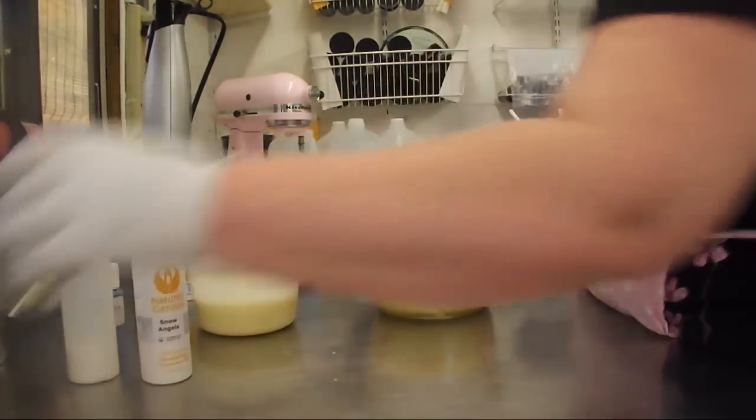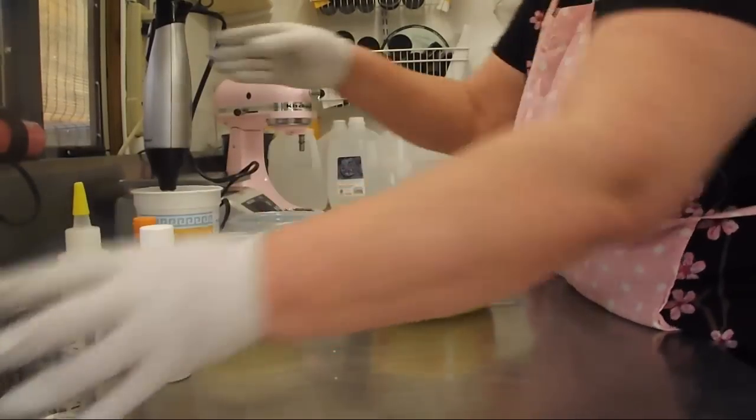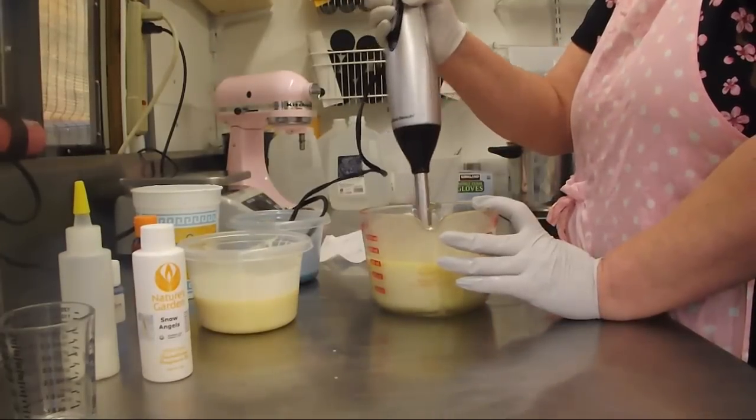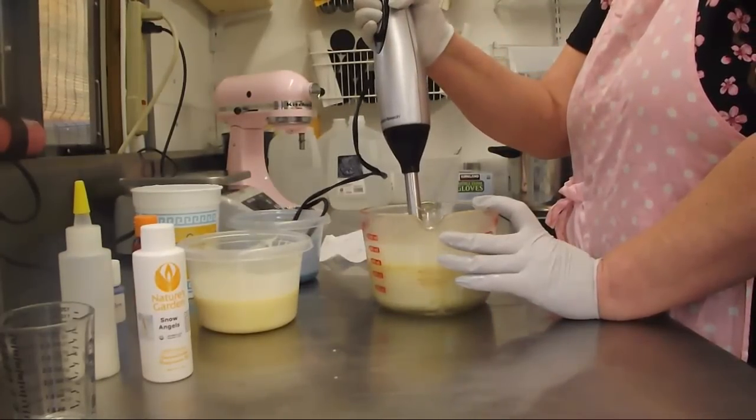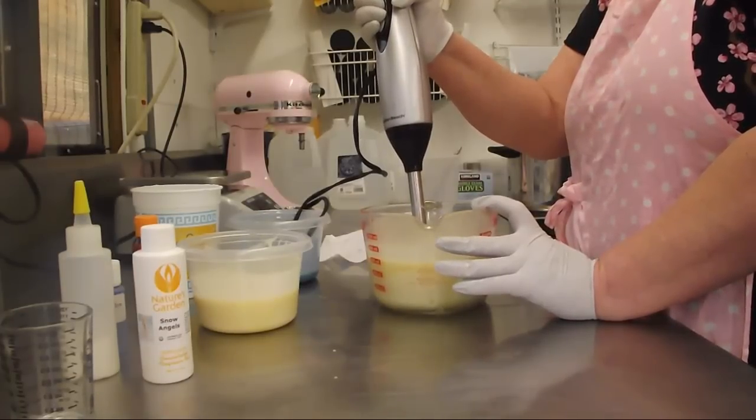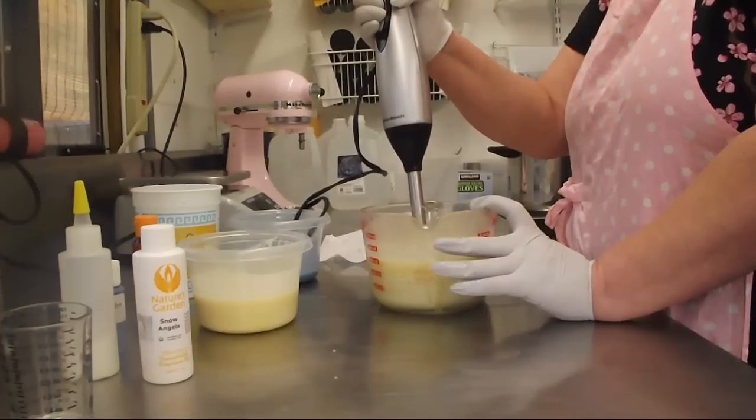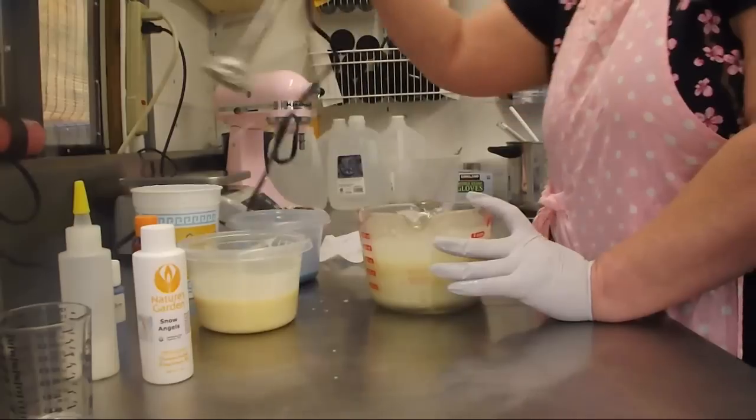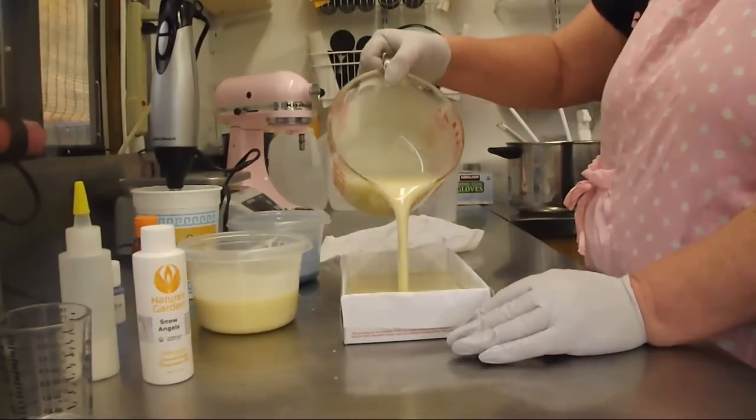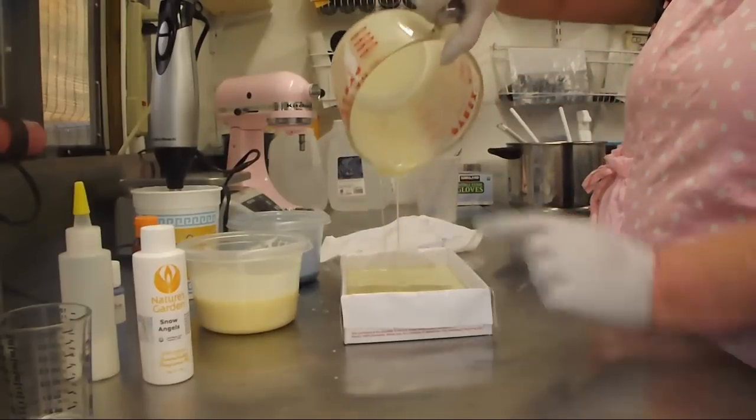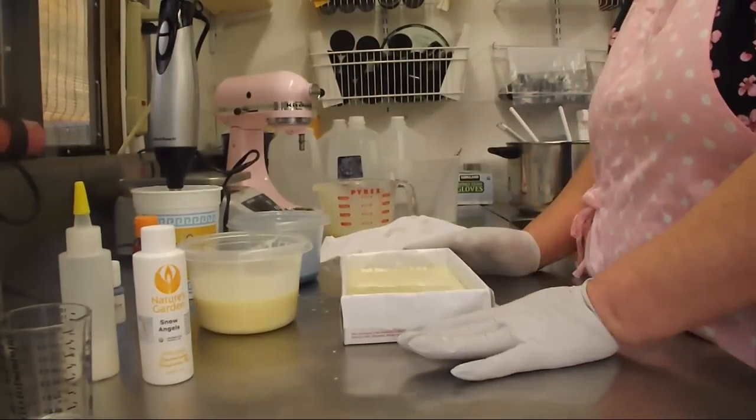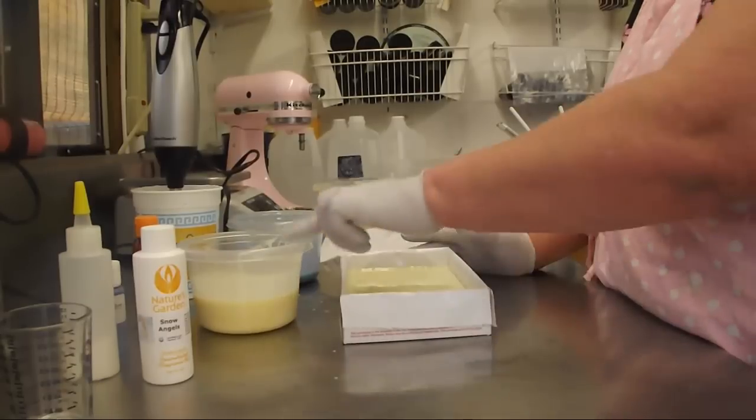Now we're going to get our fragrance in and pour into our mold. Now bear in mind, this part's going to go dark chocolate brown. So even though it's light now, it won't stay that way. I'm going to let this set up a little bit. And when it's nice and firm, we're going to come back and add our topping.